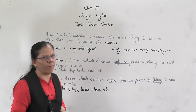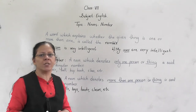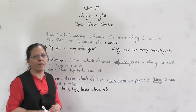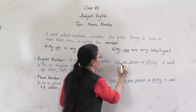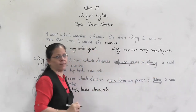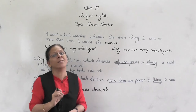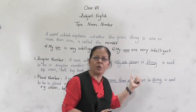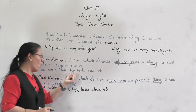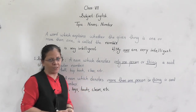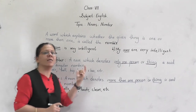In English language we have only two numbers: singular number and plural number. A noun which denotes only one person or thing is said to be in singular number. For example: chair, ball, boy, book, class, etc. All these words denote only one thing. Hence, these nouns are said to be in singular number.